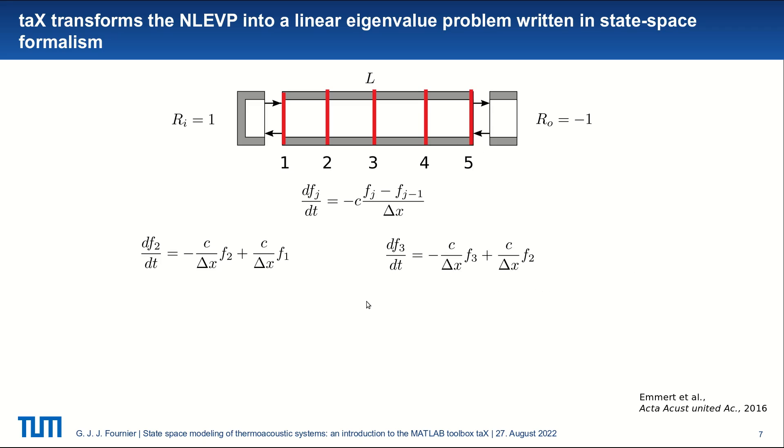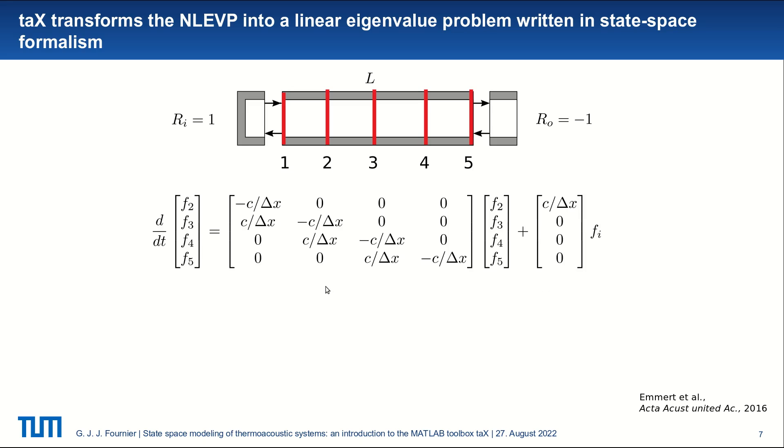And we can rewrite it in the following matrix form with the vector f2, f3, f4, f5. And we have just rewritten these four equations. We obtain a block diagonal matrix with the c over delta x coefficients. And this term just comes from the fact that at point 1, f1 is exactly f inlet. So it's just a way of rewriting the first equation.